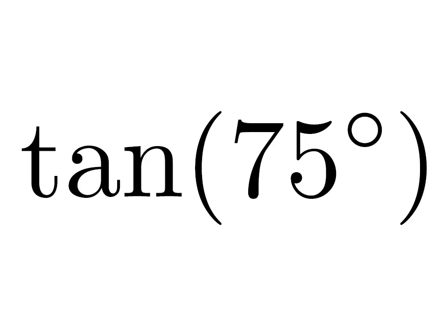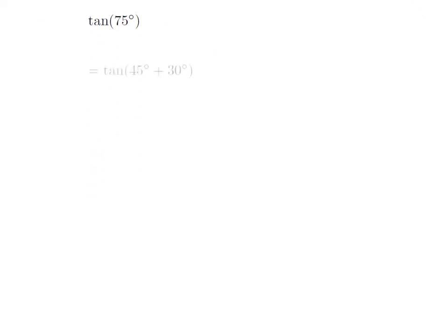In this video, we are going to find the value of tan(75°). The 75° is equal to 45° plus 30°. So, tan(75°) is equal to tan(45° + 30°).